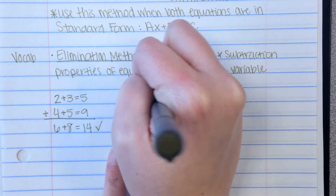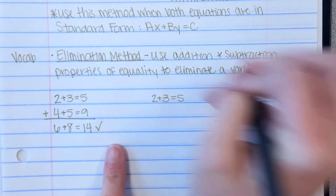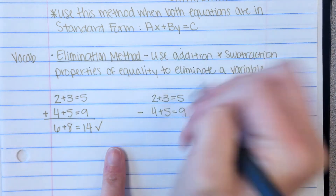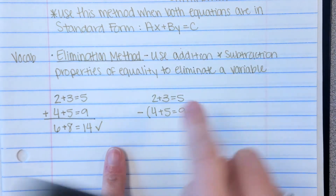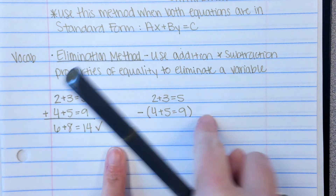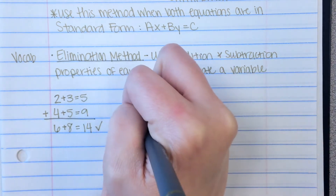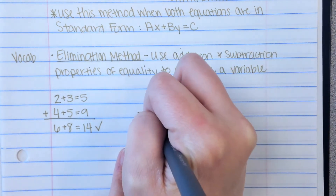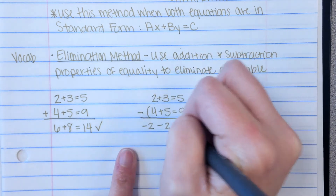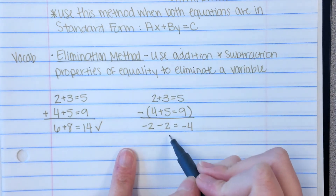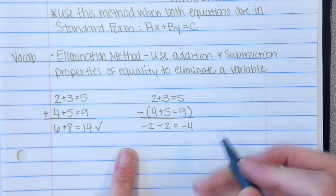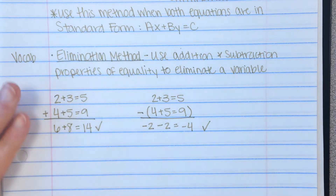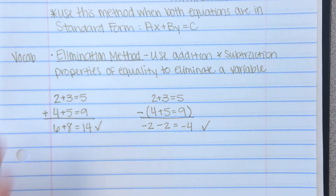Now let's do one with subtraction. We already know 2 plus 3 equals 5 is true, and 4 plus 5 equals 9 is true. If we subtract, putting the bottom quantity in parentheses because we're subtracting the entire equation: 2 minus 4 is negative 2, 3 minus 5 is negative 2, 5 minus 9 is negative 4. Is negative 2 plus negative 2 equal to negative 4? Yes — that's the subtraction property of equality. We're going to follow that same idea as we solve systems of equations.